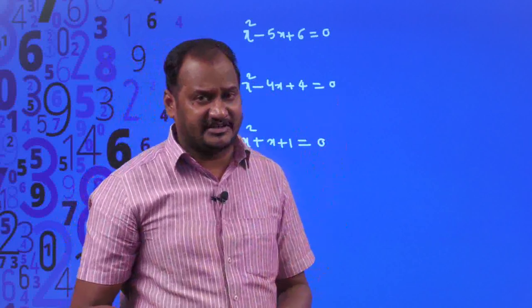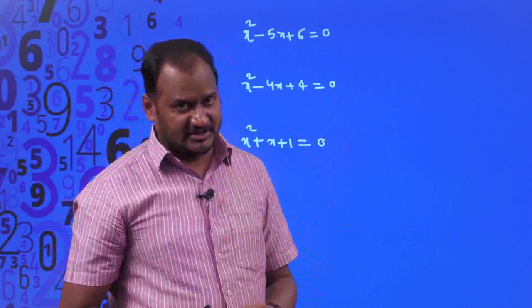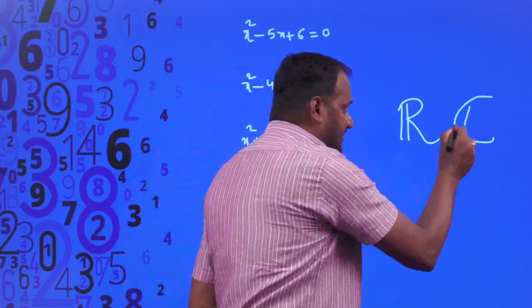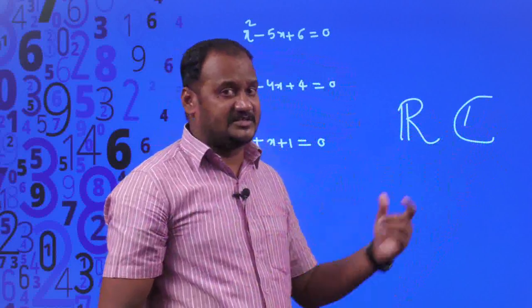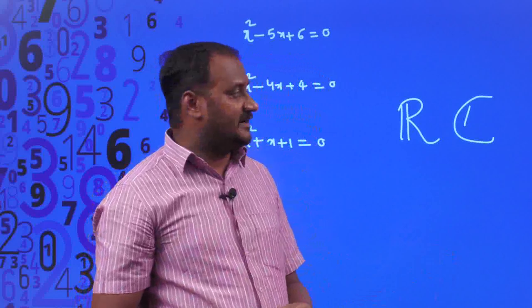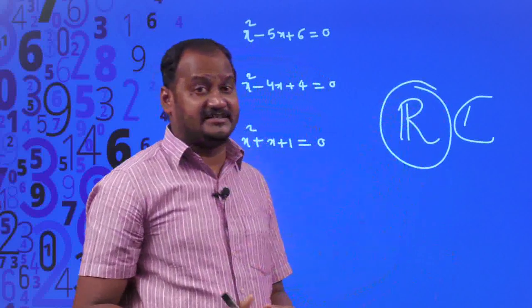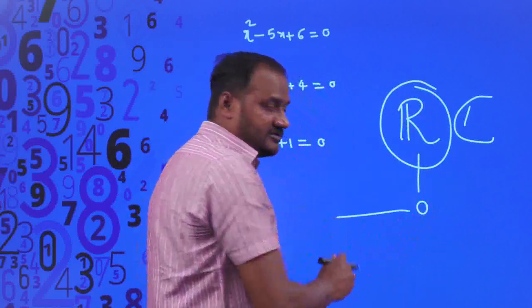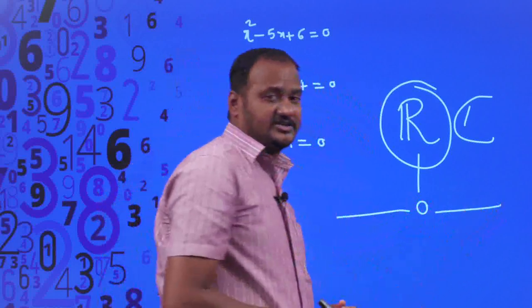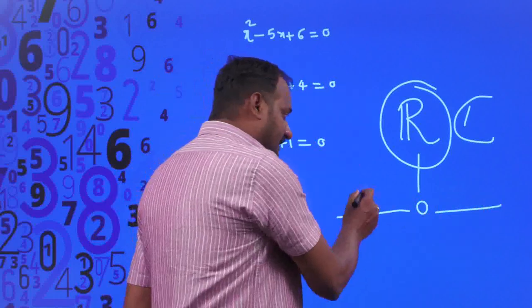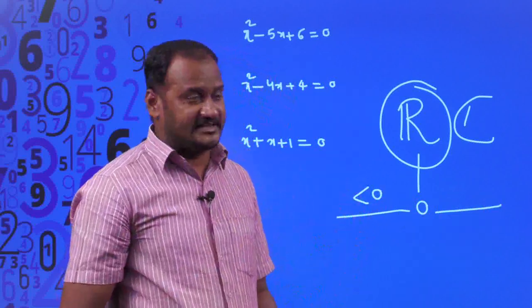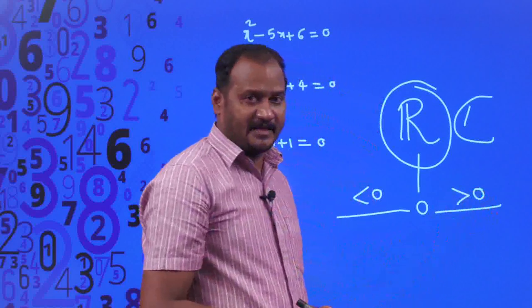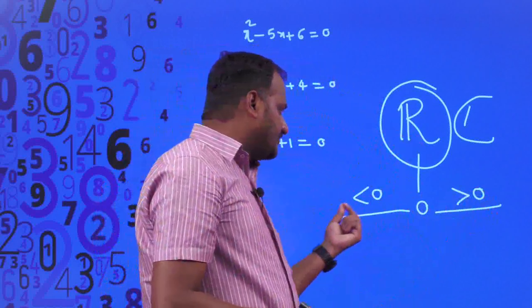What do we mean by the nature of the roots of a quadratic equation? We have two kinds of numbers: real numbers and complex numbers. Real numbers are categorized based on 0 — numbers below 0 are negative, numbers above 0 are positive, and 0 itself. Every real number is either 0, negative, or positive.